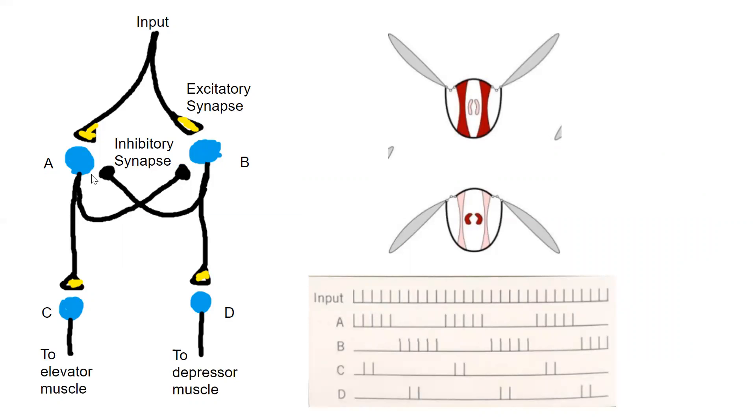So signal goes to A, A inhibits B. But then A gets hit with fatigue, B recovers and inhibits A. And then B gets fatigued and A recovers and inhibits B.